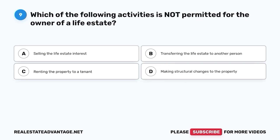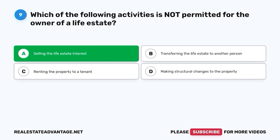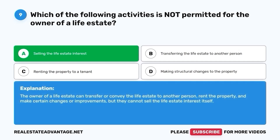Question 9. Which of the following activities is not permitted for the owner of a life estate? A. Selling the life estate interest. B. Transferring the life estate to another person. C. Renting the property to a tenant. D. Making structural changes to the property. The correct answer is A. Selling the life estate interest. The owner of a life estate can transfer or convey the life estate to another person, rent the property, and make certain changes or improvements, but they cannot sell the life estate interest itself.